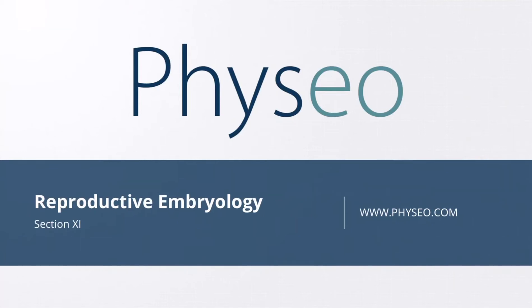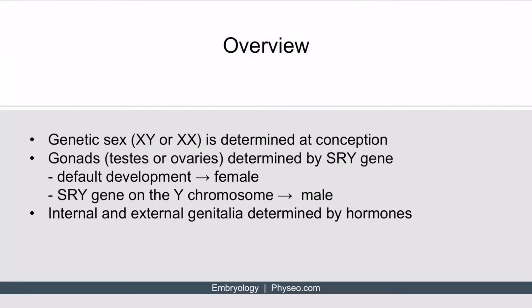Welcome to section 11 of Reproductive Embryology. In this section, we'll be discussing normal genital development. As an overview, you should know that genetic sex is determined at conception. So if a person has an X and a Y chromosome, their genetic sex is male. And if they have two X chromosomes, their genetic sex is female.